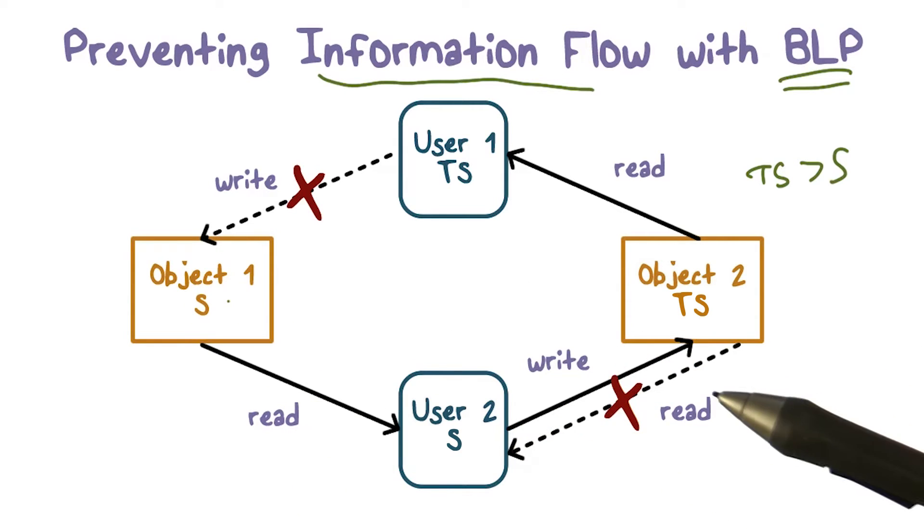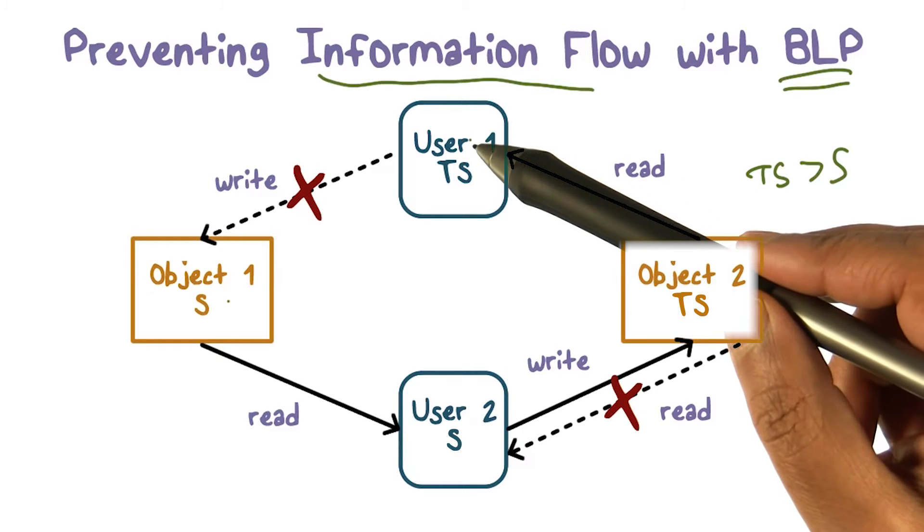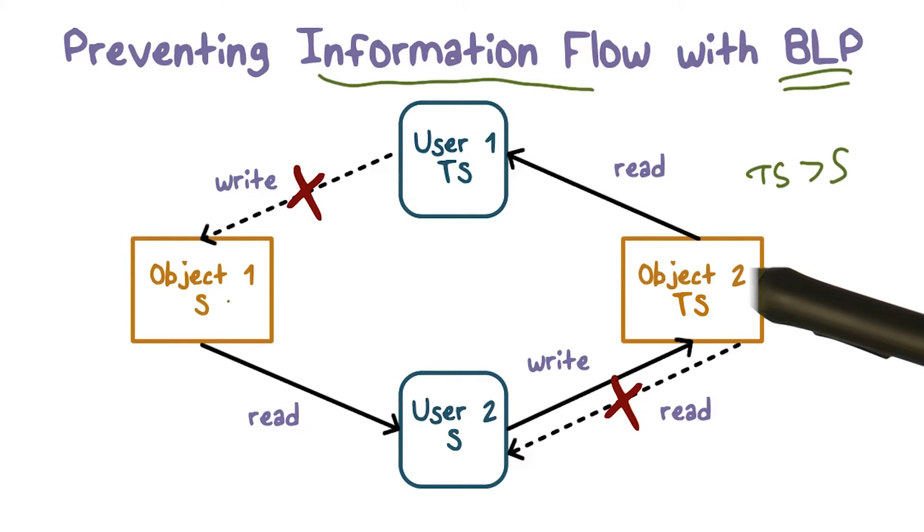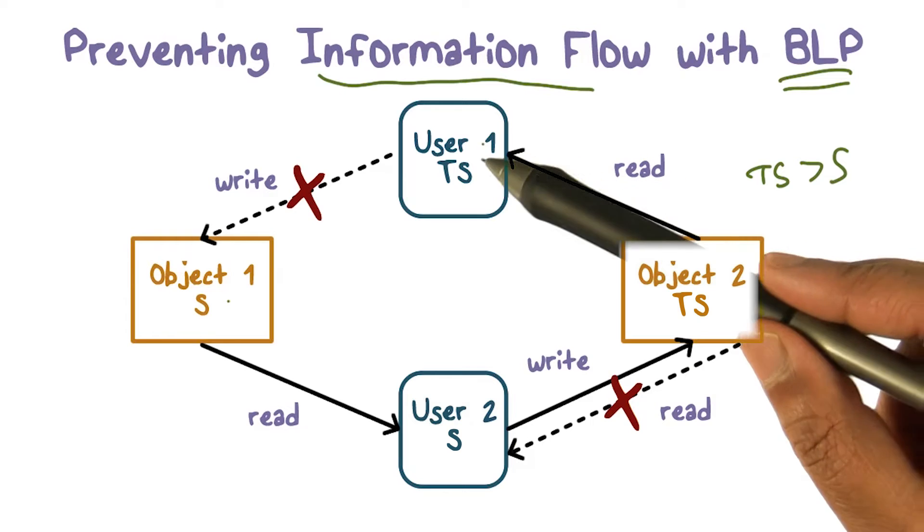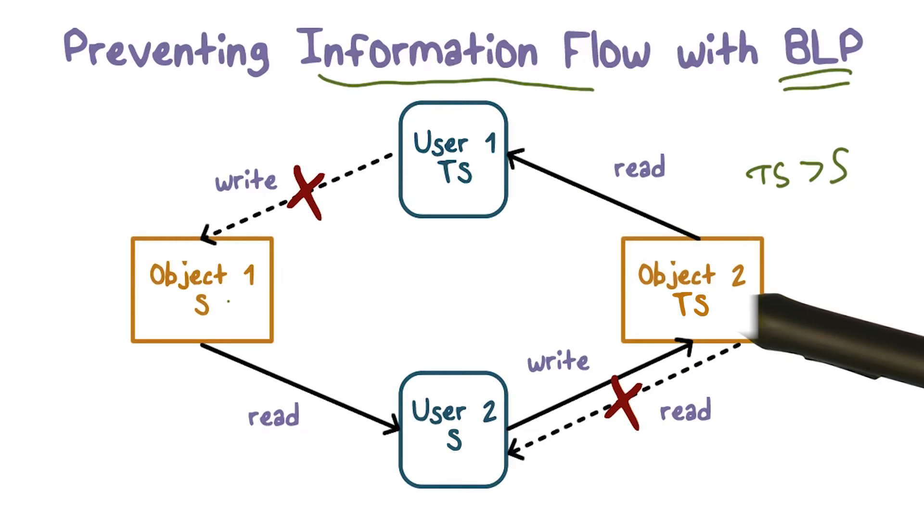So how can this information flow from here to there? So there are two paths. Path one is that a top secret user reads it. We know that the read up, read down rule means what?